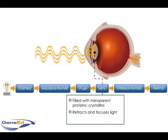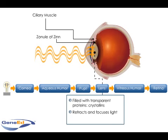The lens is held in place by a ring of ligaments known as the zonule of Zinn, which is connected by the ciliary muscle on the ciliary body. Unlike the cornea, which has a fixed curvature and shape, the curvature of the lens is variable.